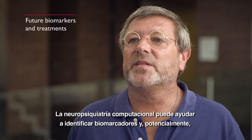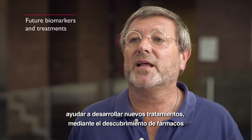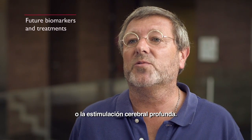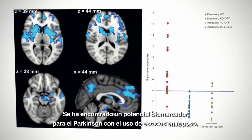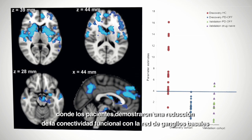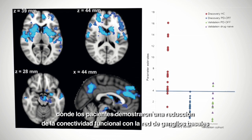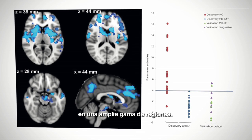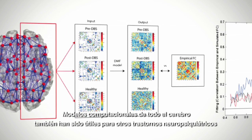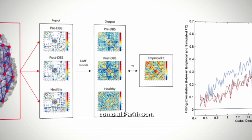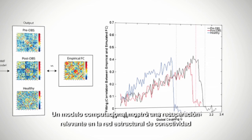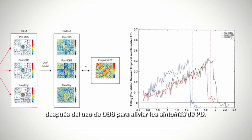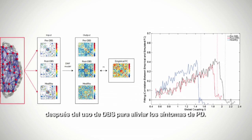Computational neuropsychiatry can help identify biomarkers and potentially help develop new treatments through drug discovery or deep brain stimulation. For example, a potential biomarker for Parkinson's was found using resting state, where patients showed reduced functional connectivity with the basal ganglia network across a wide range of regions. Whole brain computational models have also been used for Parkinson's, where a computational model showed significant recovery of structural network connectivity as a result of using deep brain stimulation to alleviate symptoms.